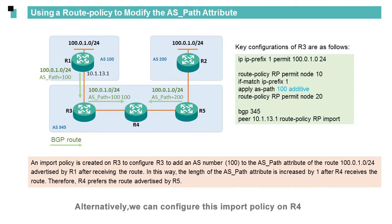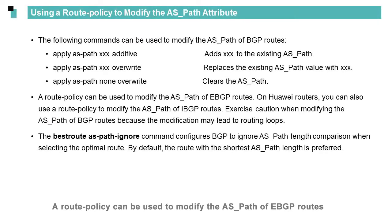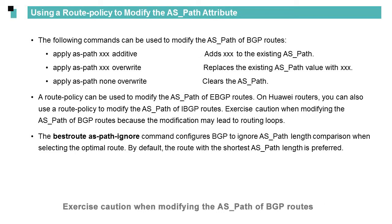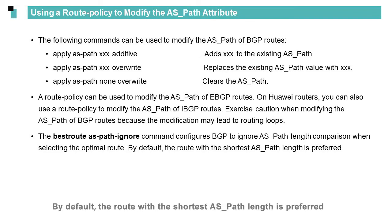Alternatively, we can configure this import policy on R4. A route policy can be used to modify the AS path of eBGP routes. Exercise caution when modifying the AS path of eBGP routes, because this modification may lead to routing loops. To configure BGP to ignore AS path length comparison when selecting the optimal route, we can run the 'best-route as-path-ignore' command. By default, the route with the shortest AS path length is preferred.